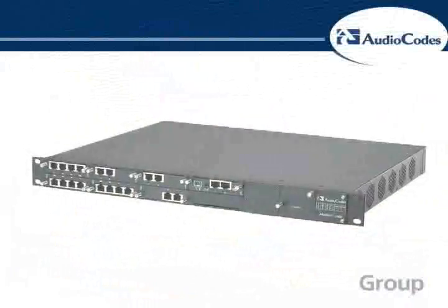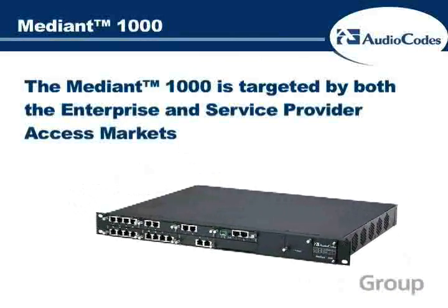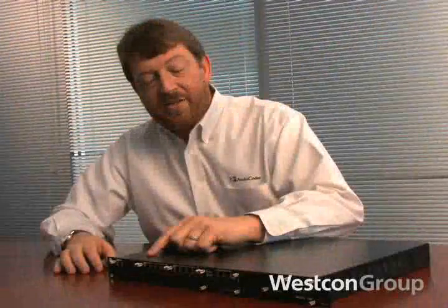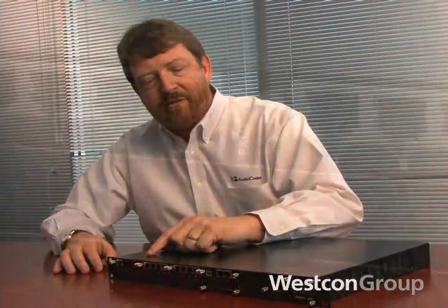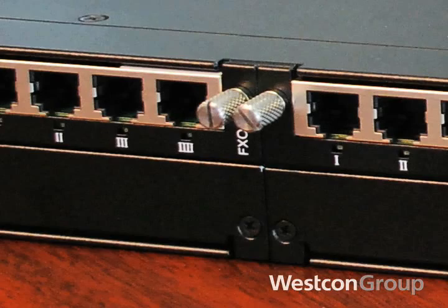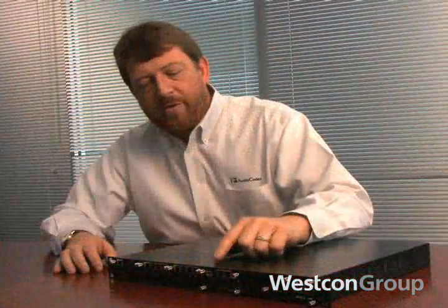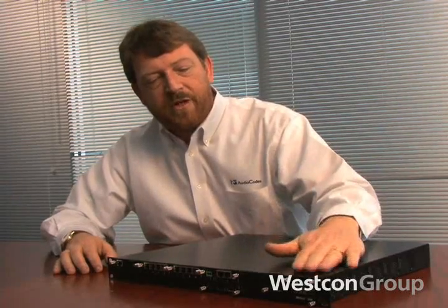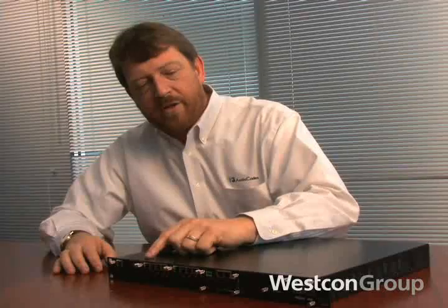The Mediant 1000 is targeted towards both the enterprise and service provider access markets, with densities from one T1/E1 port up through four T1/E1s or up to 24 analog ports. It supports SIP, MGCP, and Megaco. The Mediant 1000 is modular and includes a number of drawers that can be used to insert or remove functions from the unit. It also includes redundant power supply features and an optional Open Solutions Network processor.